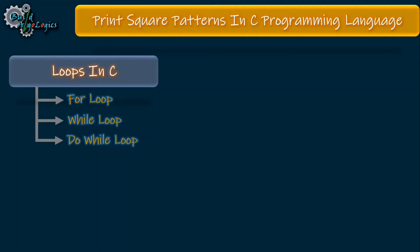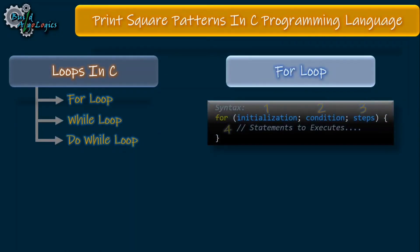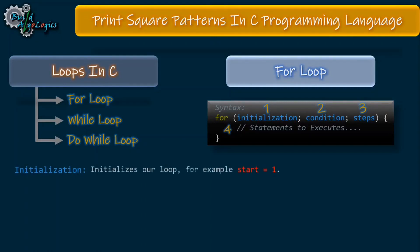Let's look at the syntax of the for loop. It basically contains four parts, but the last part is the obvious one because eventually we need to execute some statement there. The three crucial parts are initialization, condition, and steps. First we'll see these parts in theory and then see their practical implication. The first part is initialization — as the name implies, it is used for initializing our loop, or we can say it is the entry point of the loop.